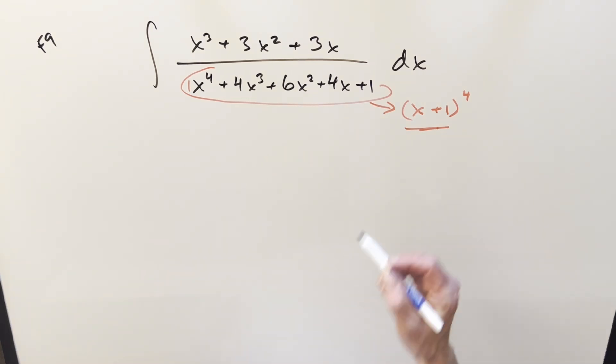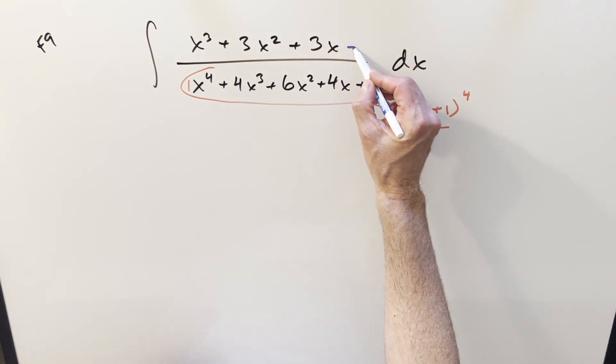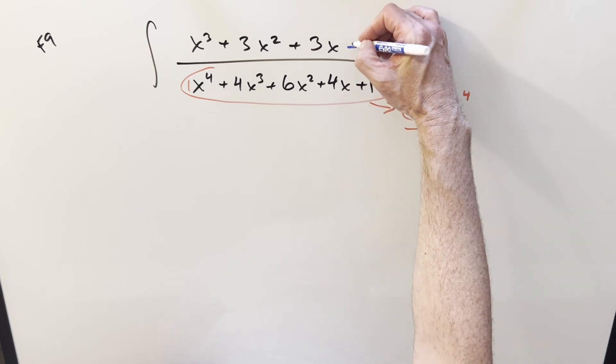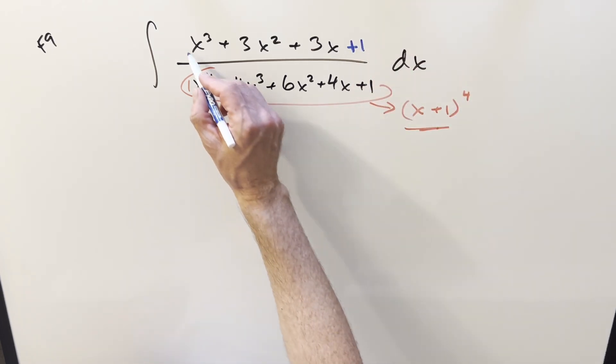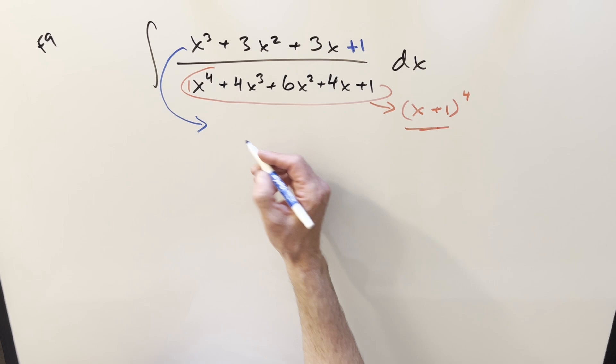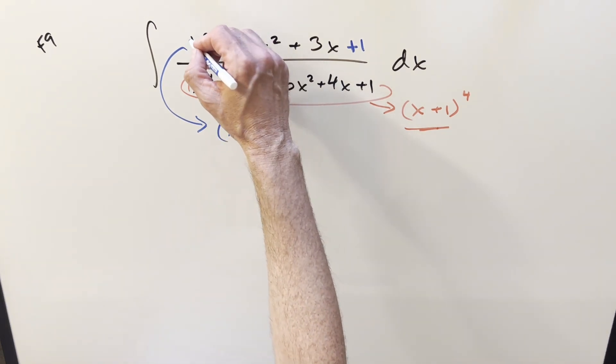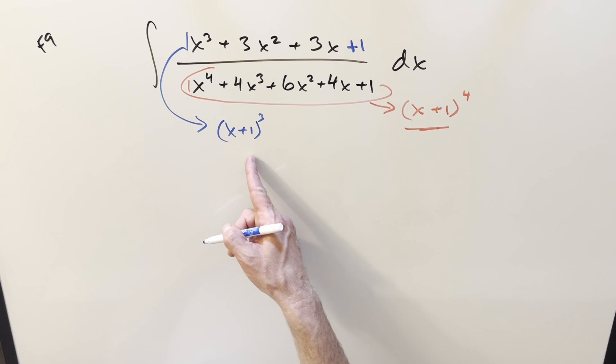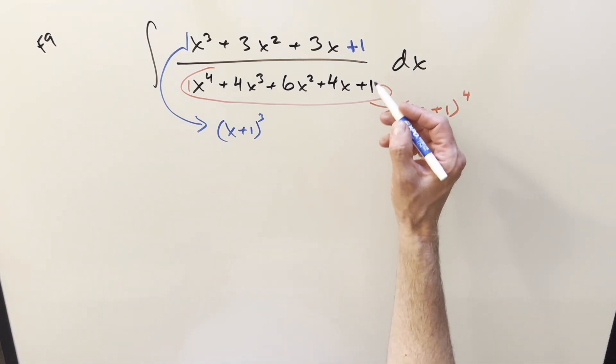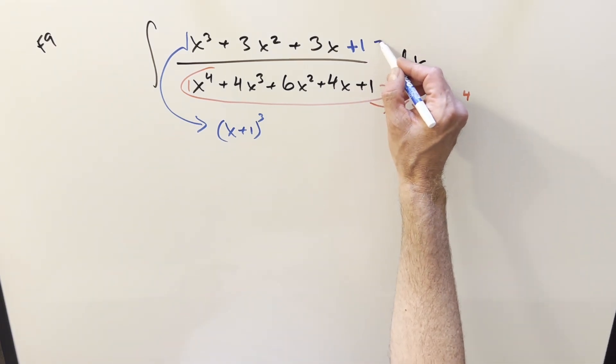And then for the numerator, the interesting thing here is if I add a plus 1 on there, this works the same kind of way. This is actually (x+1)³. Again, just noticing the coefficients are 1, 3, 3, 1. Well, we did change it, so let me subtract off 1.